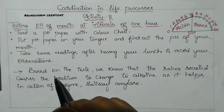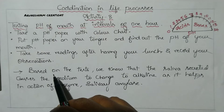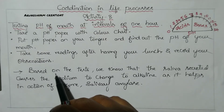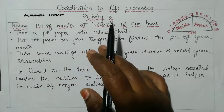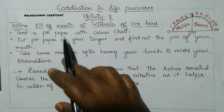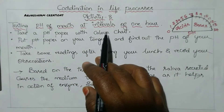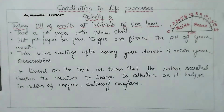Hello everyone, welcome back to our channel Arunodham Creations. Today we are going to learn about Activity 8 in our video from Coordination in Life Processes. Activity 8: Testing pH of mouth at intervals of 1 hour.